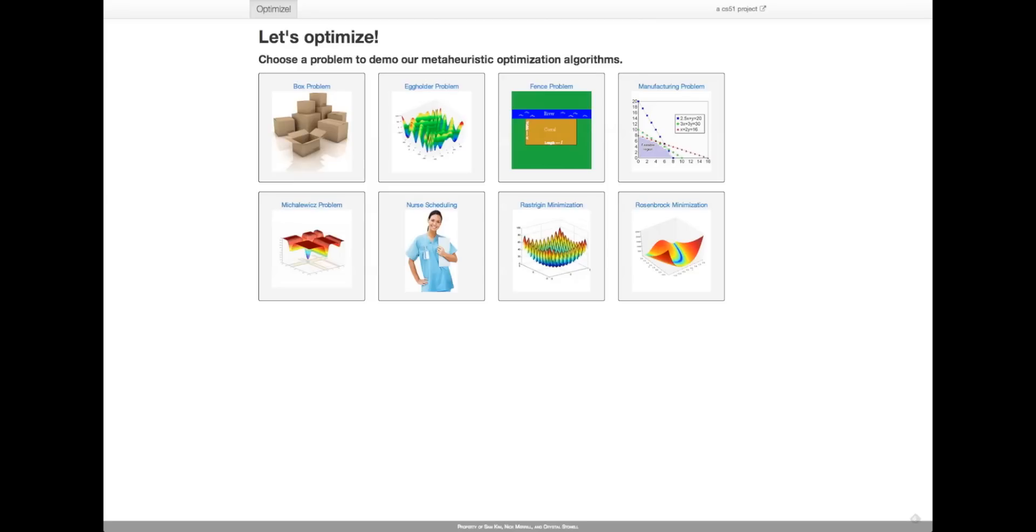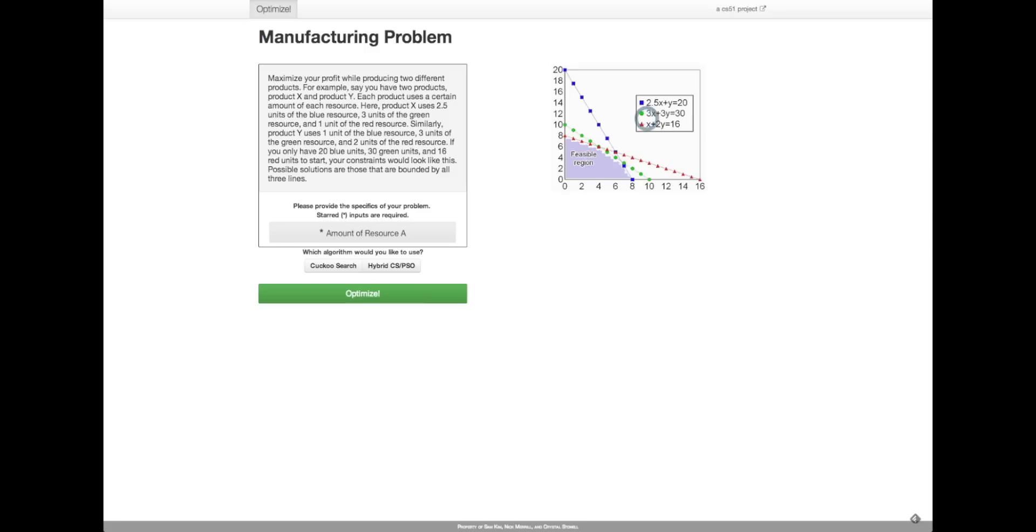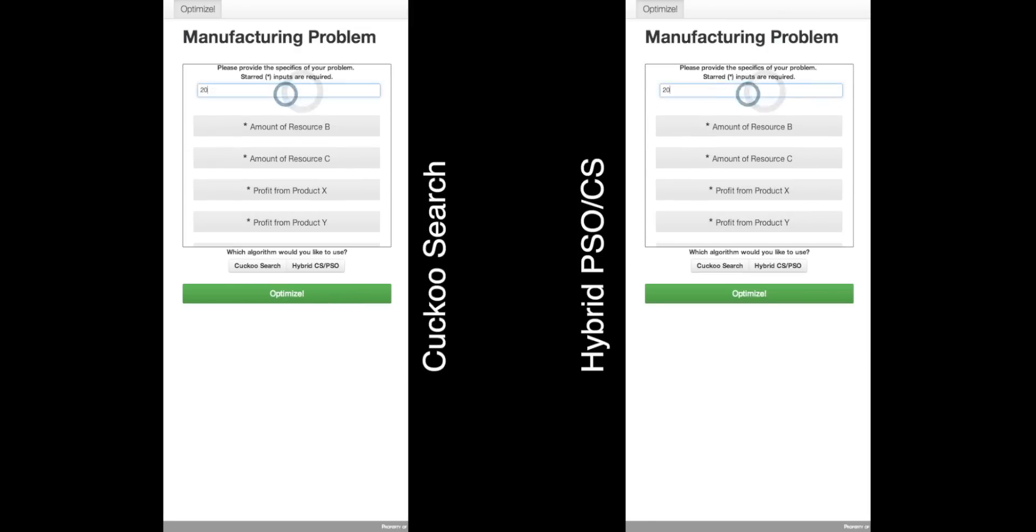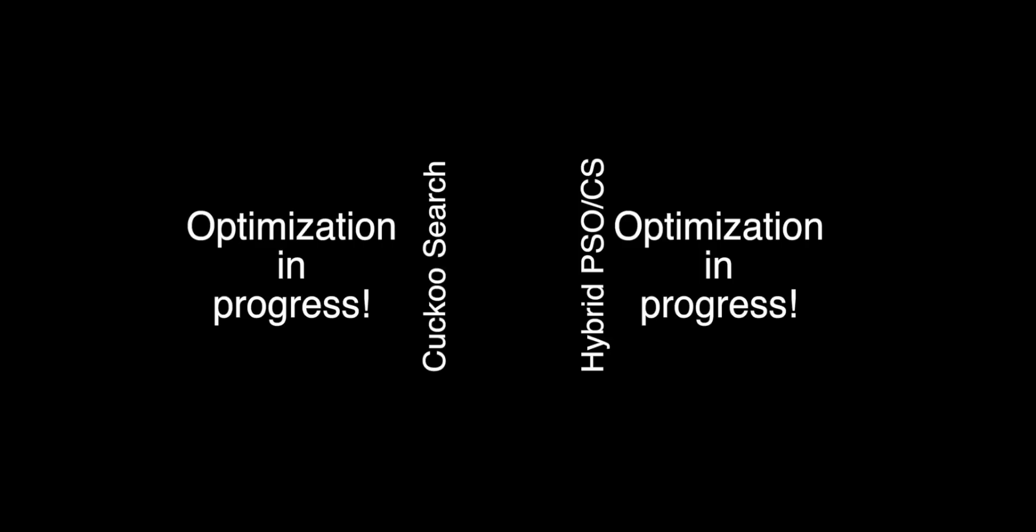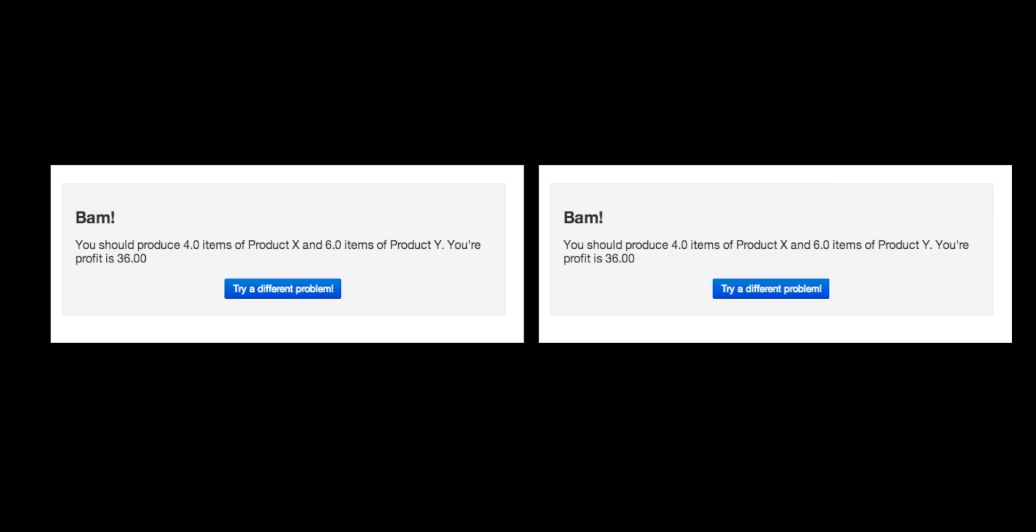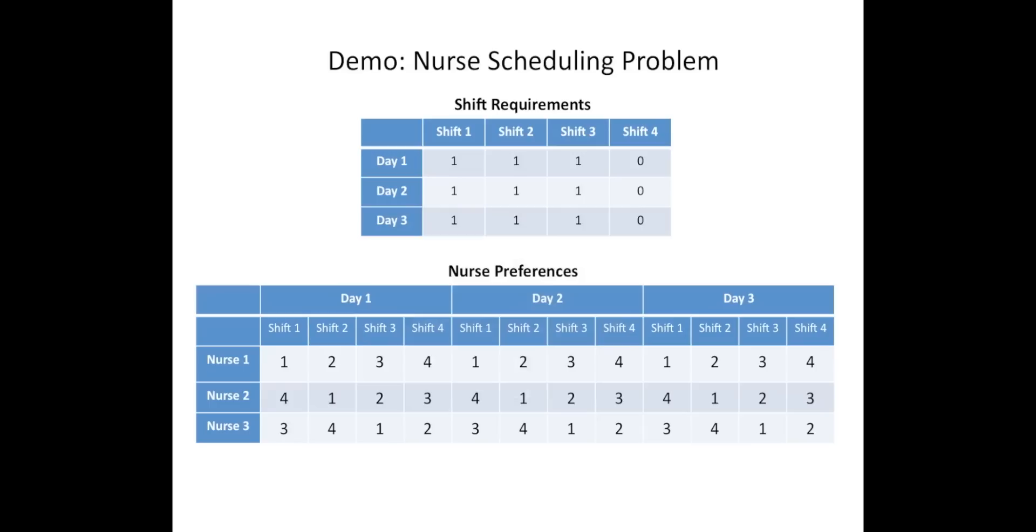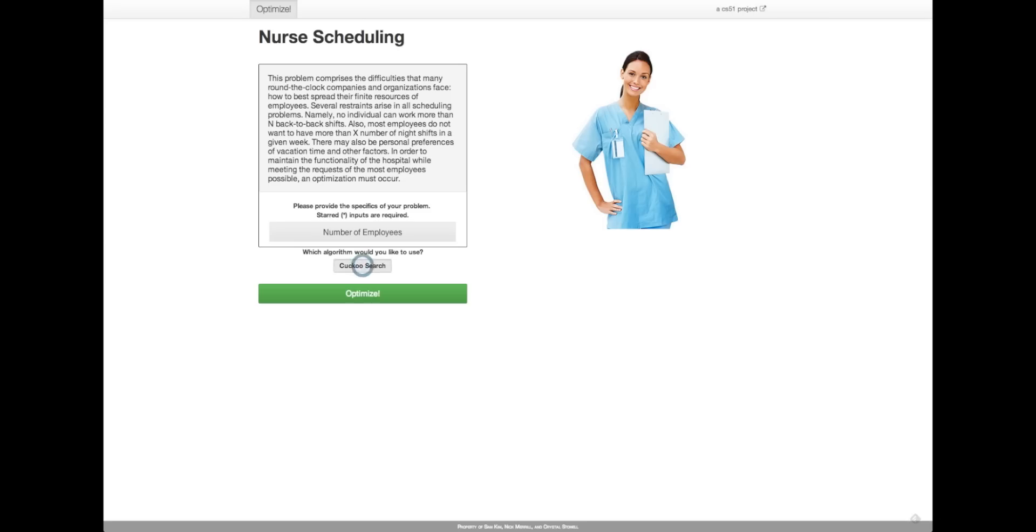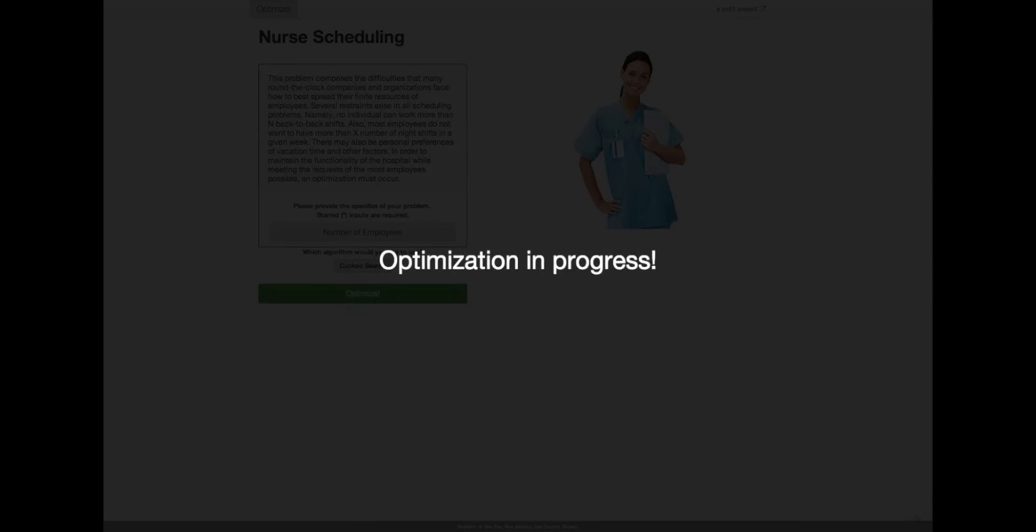Here is the website to showcase our algorithms and the optimization problems. For example, let's take a look at the manufacturing problem. We can input several constraints and choose either algorithm to solve it. And bam, we have a solution! And for the grand finale, let's solve the nurse scheduling problem. For this problem, the user must input shift requirements and employee preferences. Click Cuckoo Search and... Bam! We have a solution!